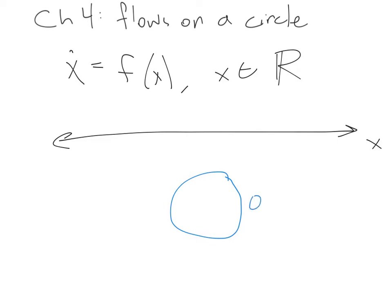We're going to use the variable theta. On the line, x was an element of R, and on the circle, theta is going to be an element of the unit circle, an element of S1.